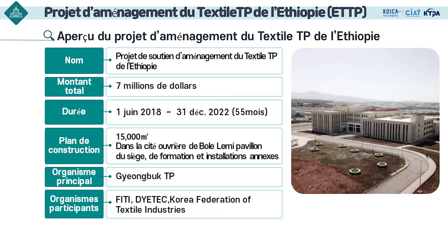Voici le projet principal de l'aménagement du technoparc. Il s'agit du bâtiment pour l'administration du Technopark Industrial Complex Management Corporation dans le site industriel de Bolelemi, situé à l'entrée du site industriel. Les troisième et quatrième étages de ce bâtiment seront utilisés comme centre d'administration, de formation et de soutien aux entreprises et sont actuellement en construction.